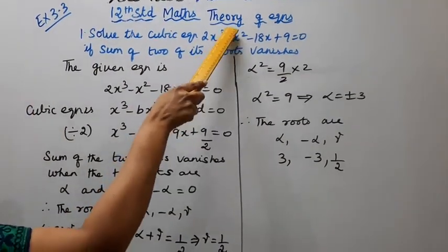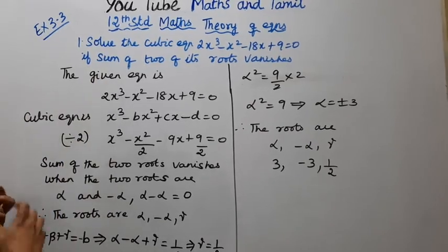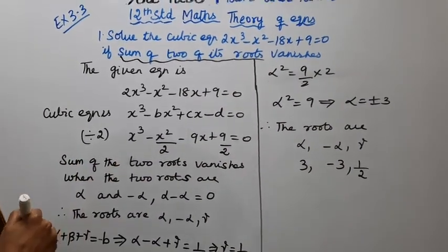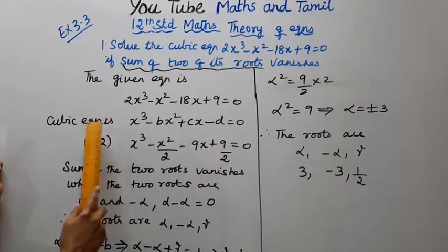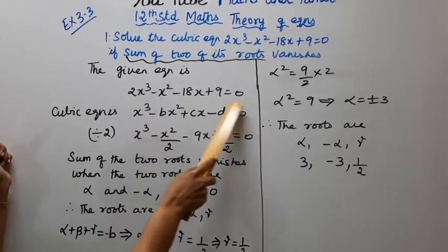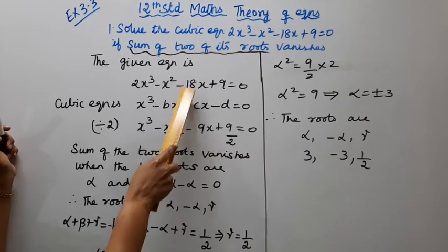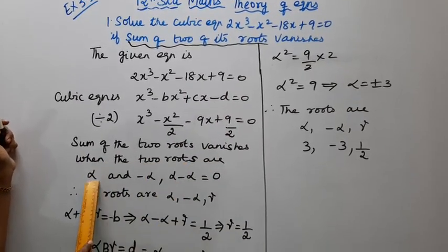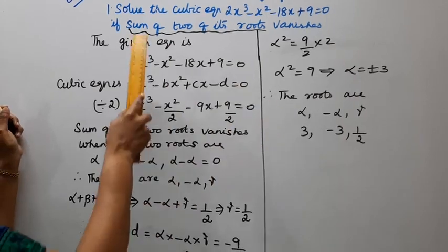We have the cubic equation 2x³ minus x² minus 18x plus 9 equal to 0. A cubic equation has 3 roots. Dividing through by 2, the standard form becomes x³ minus (1/2)x² minus 9x plus 9/2 equal to 0.